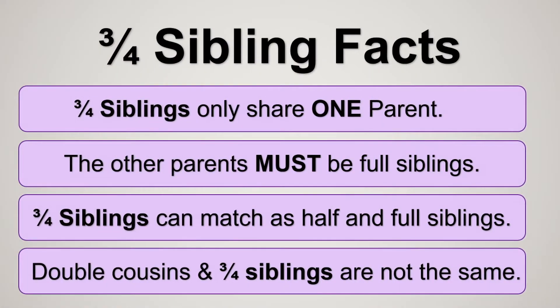Some three-quarter sibling facts: three-quarter siblings only share one parent, and the other parents must be full siblings — they can't be half siblings, because if they are, you and your three-quarter sibling would actually be five-eighths siblings. Three-quarter siblings can match as half and full siblings on websites such as 23andMe and Ancestry, and this is due to how DNA doesn't split evenly.